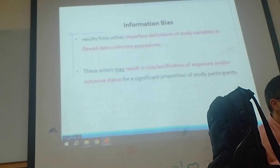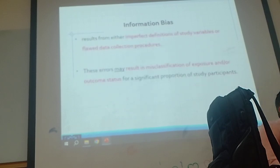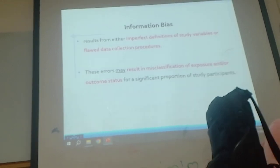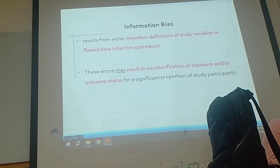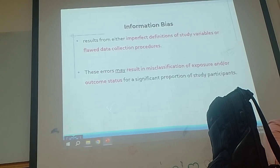Another definition of information bias: imperfect definition of study variables or flawed data collection procedure, and this error may result in misclassification of exposure or outcome. Information bias is more common in analytical study.